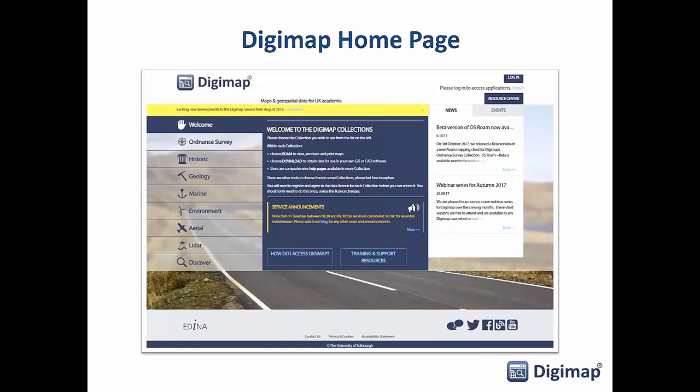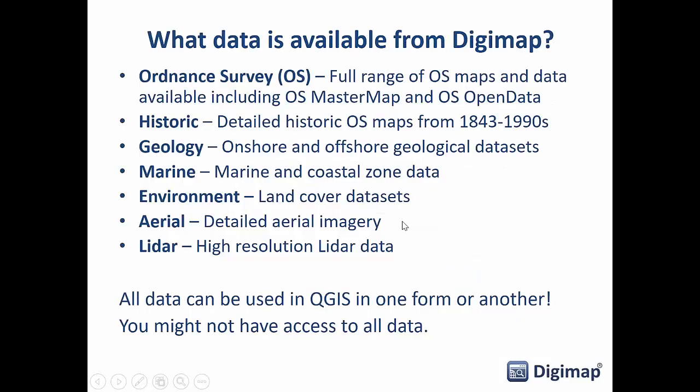Here is the Digimap home page — yours may look a little different at your institution depending on how many collections you subscribe to. Down the left-hand side are all the different collections. From Ordnance Survey we've got pretty much the full range of their maps and data; the only key dataset we don't have is their address-based data due to a different licensing arrangement. Historic Digimap has all Ordnance Survey maps from 1843 right through to the 1990s, when all maps were made on paper originally.